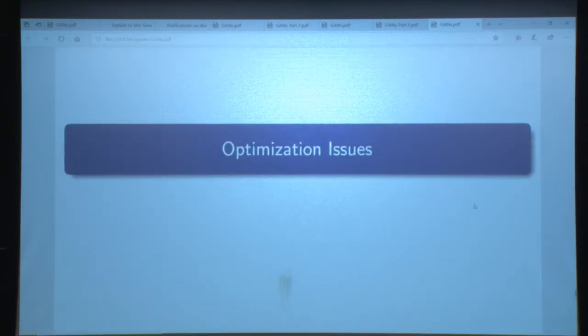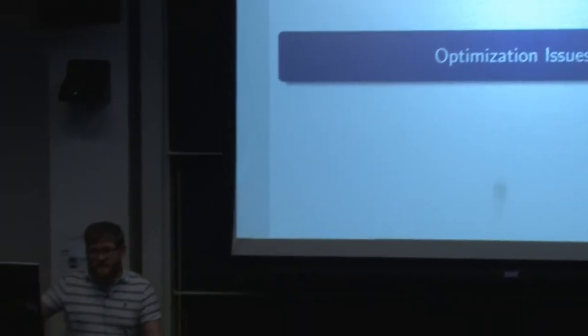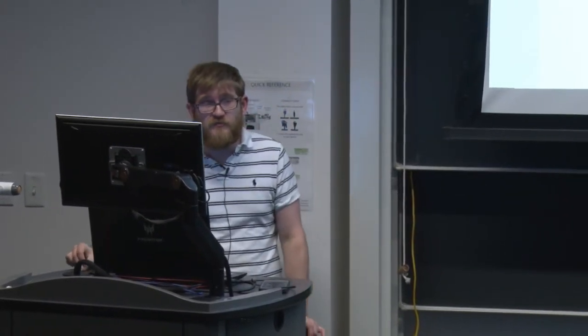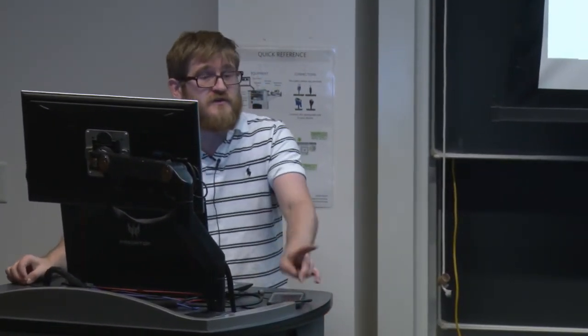Any quick questions about what you can do with GANs before we start talking about how you actually train them? Does it have to be images? Definitely not — there's a lot of speech work, and it's trickier when generating text because it's discrete, but there is work on that. For generating speech, there's actually a lot of good research.